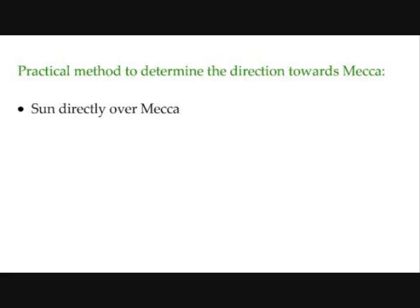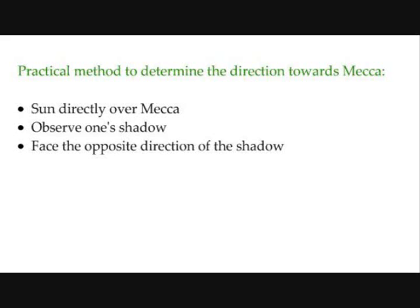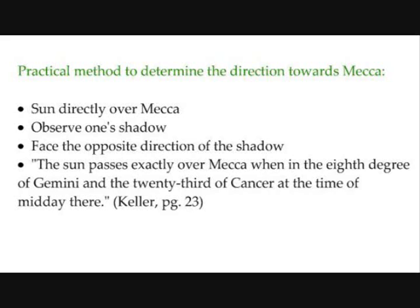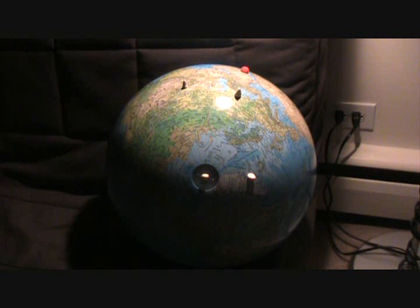At-Tusi determined that when the sun is directly over the Ka'bah, all someone would need to do is see which way the shadow is facing and pray in the opposite direction. The sun passing over the Ka'bah only happens twice a year. As At-Tusi himself mentioned in Kitab al-Tathkira, the sun passes exactly over Mecca when in the 8th degree of Gemini and the 23rd of Cancer at the time of midday there. These days are on May 28th and July 16th.